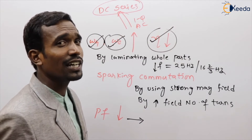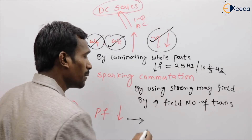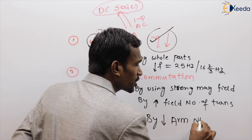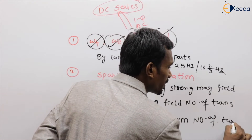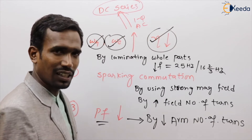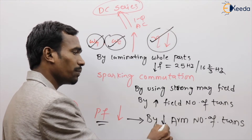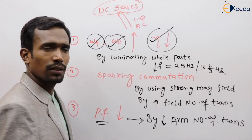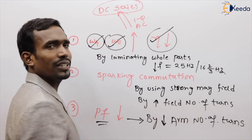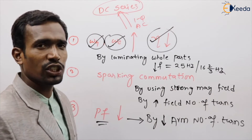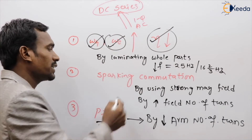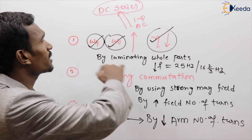The third remedy is for improving the power factor. By reducing the reactance — that is, by reducing the armature number of turns — we can improve the power factor. So: laminating and reducing frequency improves efficiency; more field turns improves commutation; fewer armature turns improves power factor.